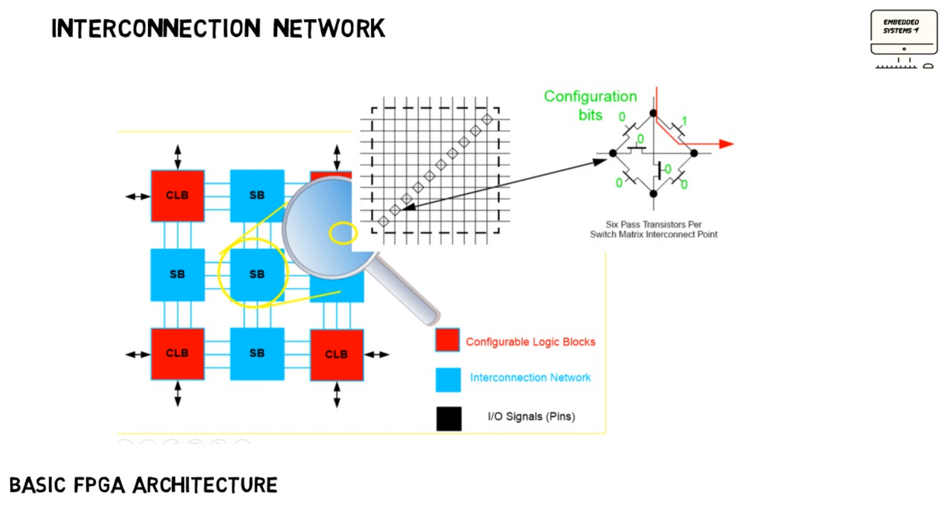The second part is Interconnection Network, the programmable routing. The programmable routing in FPGA provides connections among logic blocks and input-output blocks to complete a user-defined design.